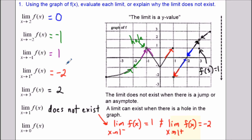For the last limit, the limit as x approaches 0 of f(x): you can see how this part of the graph is nice and connected. The graph when x equals 0 is heading towards a height of negative 1, so the limit as x approaches 0 is negative 1.